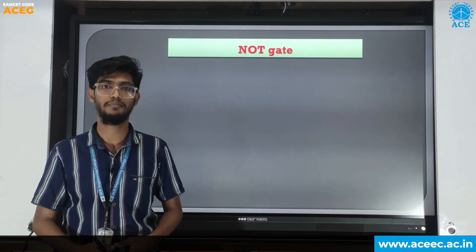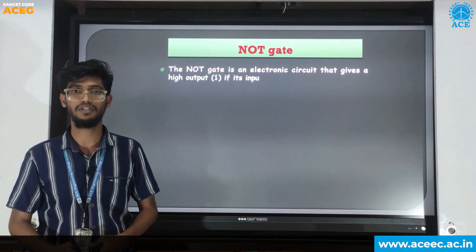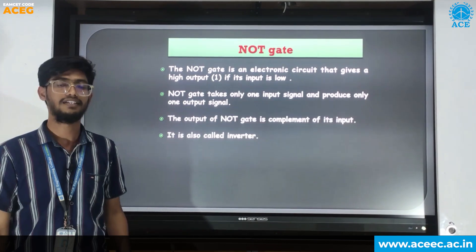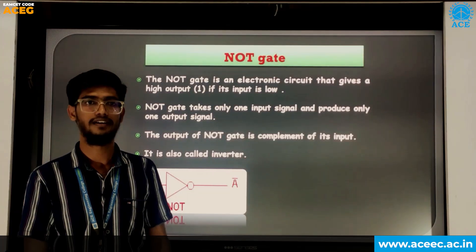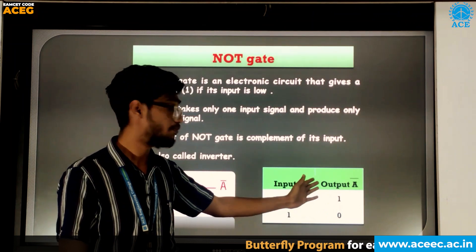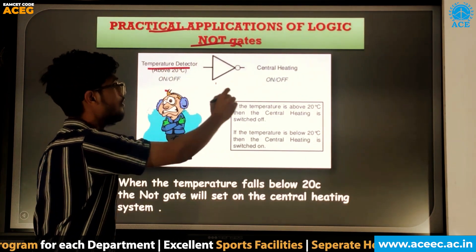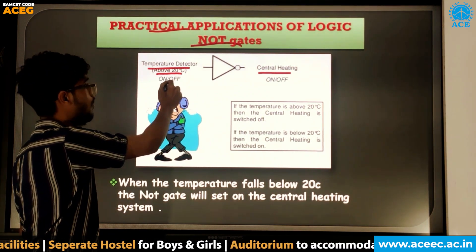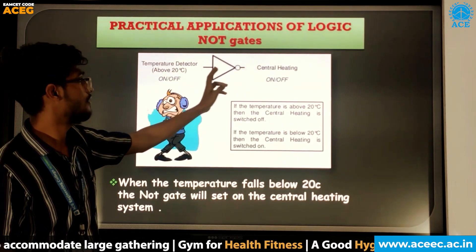Hi, this is Arsha. I am from the CSC department. I am going to explain about the NOT gate. The NOT gate is an electronic circuit that gives high output if its input is low. It is an inverter. The output of the NOT gate is the complement of its input. The input is A and the output will be A complement. In the truth table: if input is 0, output will be 1; if input is 1, output will be 0. The practical application of the NOT gate is a temperature detector. The output is central heating. If temperature is above 20 degrees Celsius, the input will be ON and the output will be OFF. If temperature is below 20 degrees Celsius, the central heating will be ON.